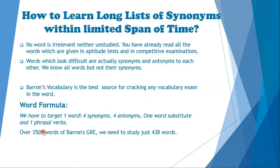You have to record words in your diary — these include antonyms and one phrasal verb if you can find one related to the basic word. Over three thousand five hundred words are in the balanced GRE vocabulary. If you follow this formula, you only need to study four hundred thirty-eight words, because we are going to take four synonyms and four antonyms out of that large vocabulary list.